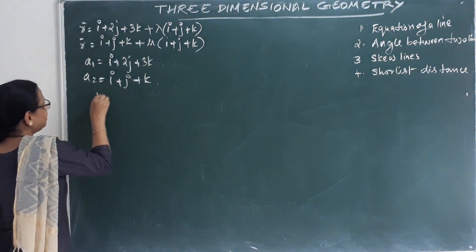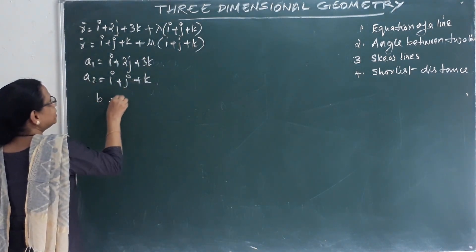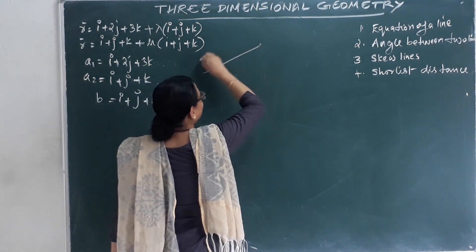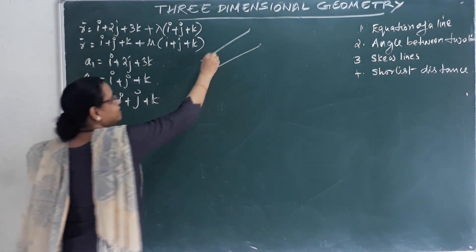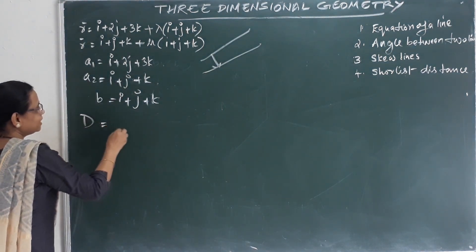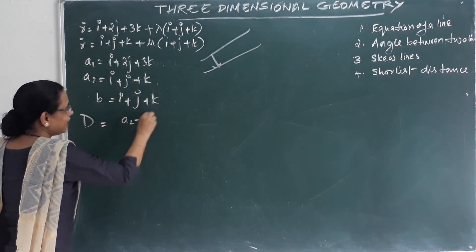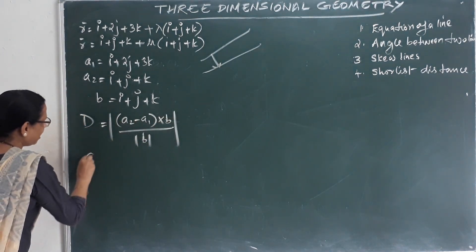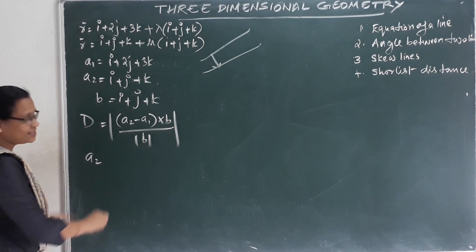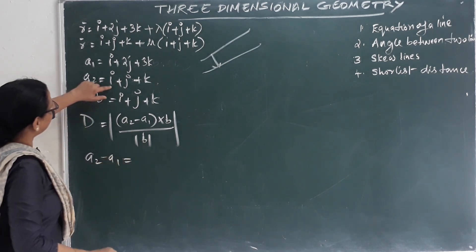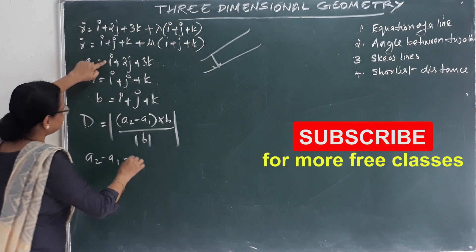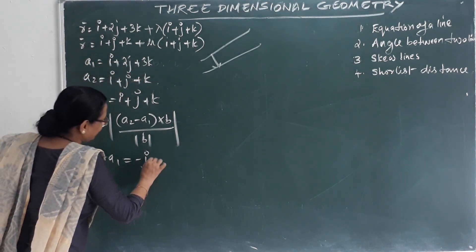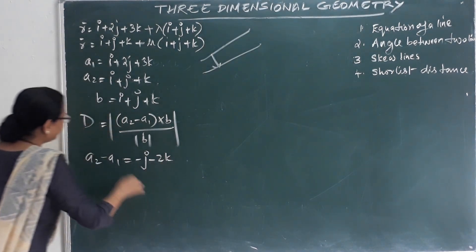Since b equals i plus j plus k, this is the parallel line direction. Now we find vector b as A2 minus A1: i minus i equals 0, j minus 2j minus j gives negative j terms, and k minus 3k gives minus 2k. So b equals 0i minus j minus 2k.